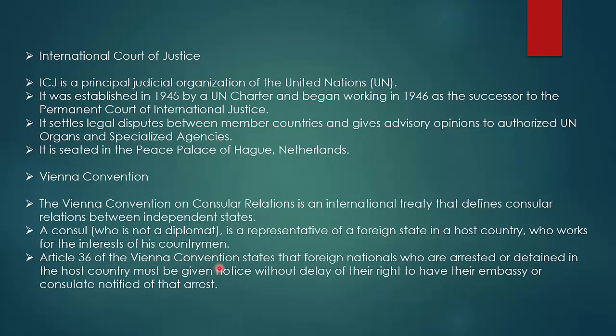What is the Vienna Convention on Consular Relations? It is an international treaty that defines consular relations between independent states. A consul — who is not a diplomat — is a representative of a foreign state in a host country who works for the interests of his countrymen. Article 36 of the Vienna Convention states that foreign nationals who are arrested or detained in the host country must be given notice without delay of their right to have their embassy or consulate notified of the arrest. Pakistan did not do this, and that's why India went to the ICJ.